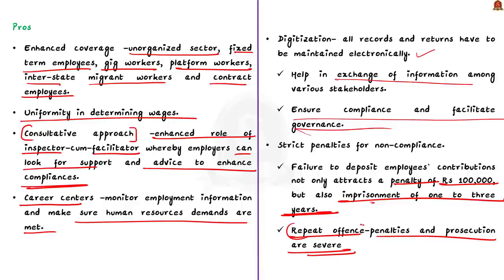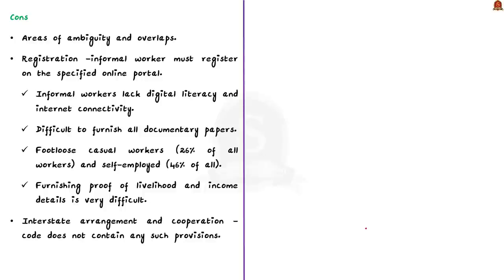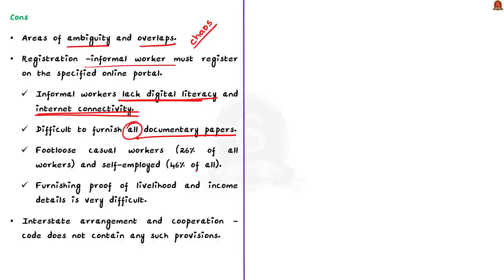Now let us move on to the cons discussed in the editorial. According to the author, the Act has areas of ambiguity and overlaps which can create chaos in its implementation. According to the Act, an informal worker has to register on a portal to avail the benefits. But most informal workers lack digital literacy and internet connectivity, and also find it difficult to furnish all documentary papers required as part of the registration process. Most informal workers are footloose, casual workers and self-employed who move from place to place in search of livelihoods. Furnishing proof of livelihood and income details in the absence of tangible employer-employee relations is very difficult, and such requirements deter informal workers from completing registration, leaving them outside the social security ambit.